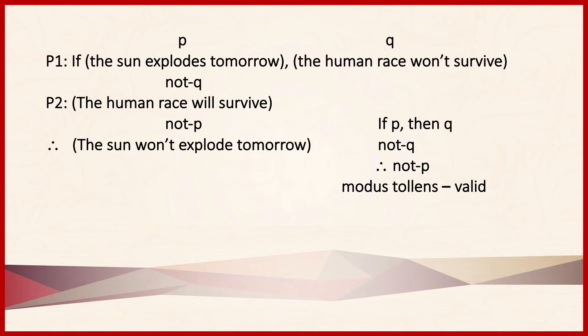So writing out the argument symbolically, we have if P then Q, not-Q, therefore not-P, which is a valid modus tollens.